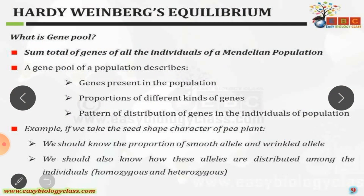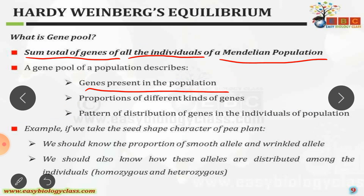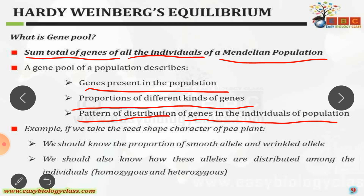The next one is gene pool. Gene pool is nothing but the sum total of genes of all the individuals of a Mendelian population. The gene pool represents the population and helps us know the proportion of different kinds of genes present in that population, as well as the pattern of distribution of genes among individuals. Summation of all the genes is called the gene pool.